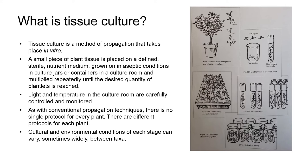Let's start by defining tissue culture. Tissue culture is a branch of plant propagation where very small pieces of plant tissue are propagated in vitro on a defined medium in aseptic conditions in a laboratory. In vitro just means in a container. The tissue is multiplied repeatedly until the desired quantity of plantlets is reached.